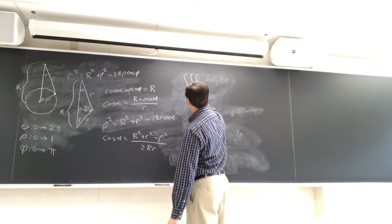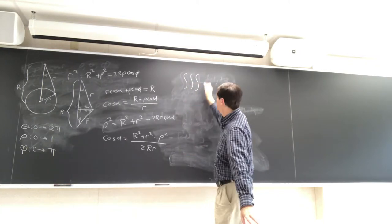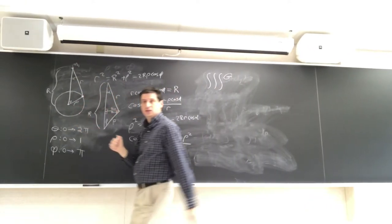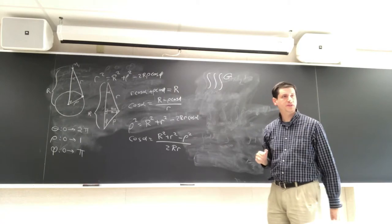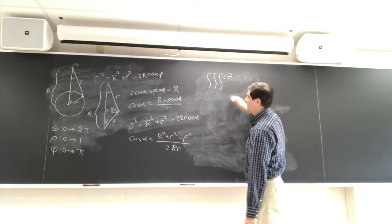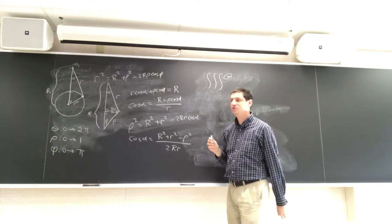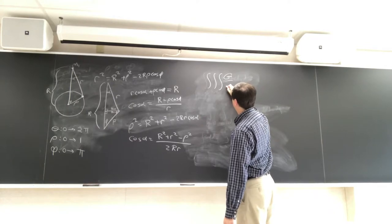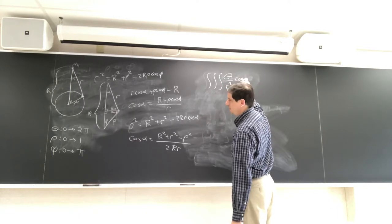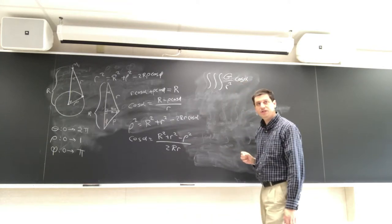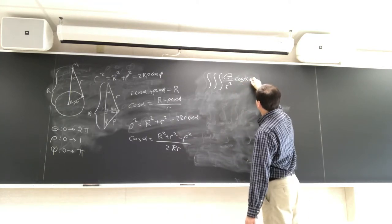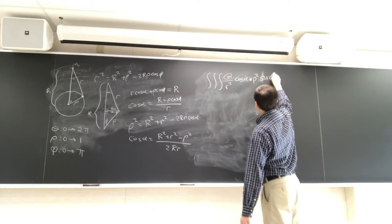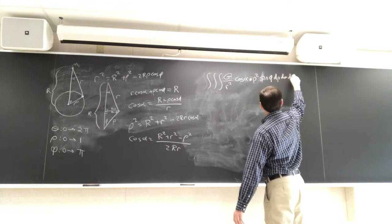We want to integrate over the sphere. The force is G m₁ / r². We'll assume the density is 1. Then we have G m₁ divided by r², times cos α, times the spherical volume element ρ² sin φ dρ dθ dφ, with ρ from 0 to 1, θ from 0 to 2π, and φ from 0 to π.